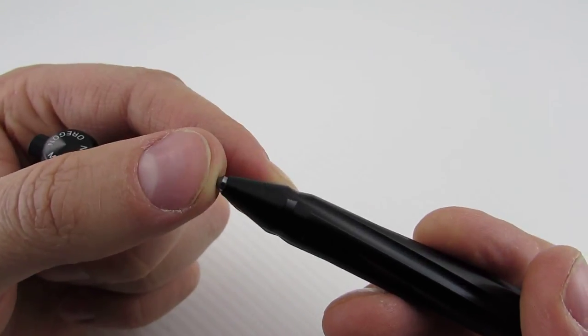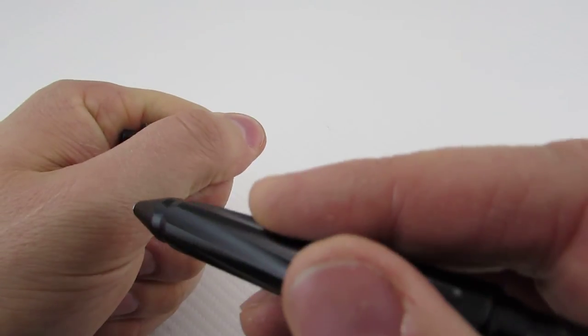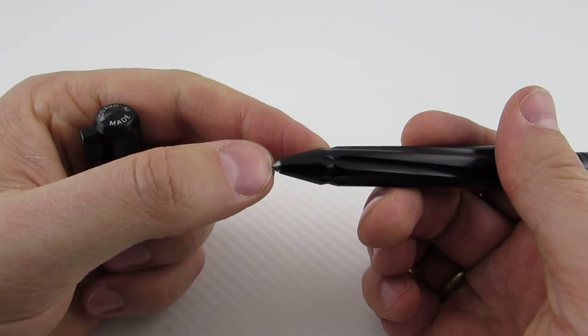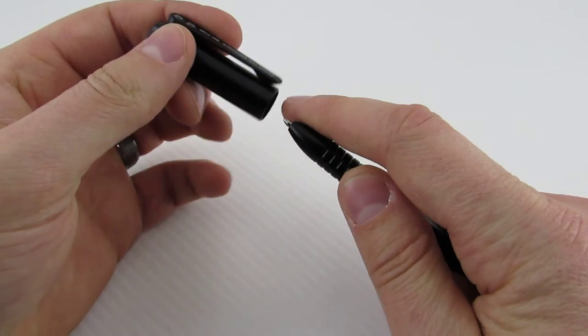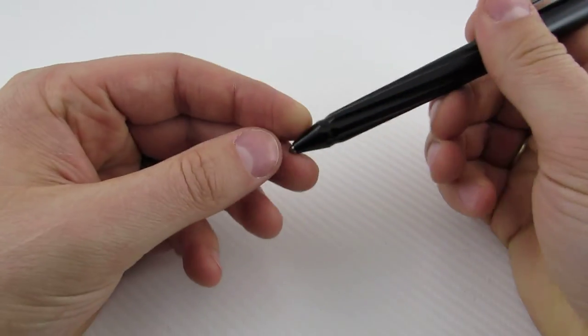Then we come to the back and you do have a carbide glass break. This does come to a fairly nice point, it is a little bit sharp. Let me see if I can show you. So it will scratch.